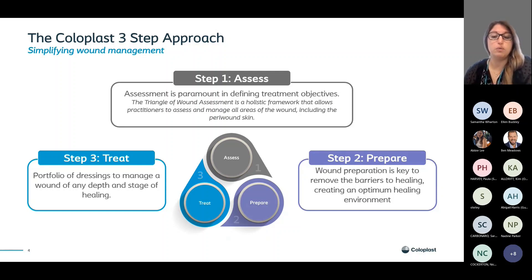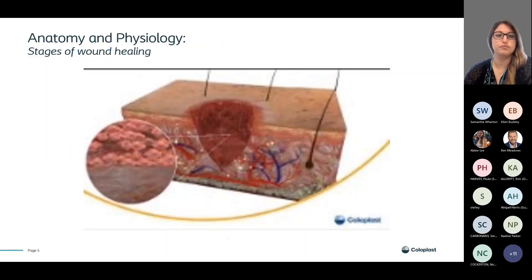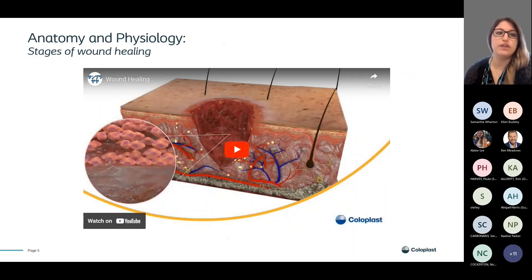With wound preparation we look not only at the wound bed but the wound edge and the peri-wound skin. In preparing our wounds, we are removing the barriers to healing and creating that optimum healing environment to help our wounds move towards healing. When we've done step two — preparation — we move to step three, which is treatment. That's what we're going to discuss today. We'll look at the portfolio of dressings to manage a wound of any depth and stage of healing. I'm going to play you a video on the anatomy and physiology of wound healing stages.